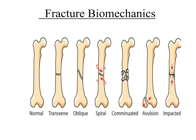In fracture biomechanics, the types of fractures include: transverse fracture, oblique fracture, spiral fracture, comminuted fractures, avulsion fractures, and impacted fractures.